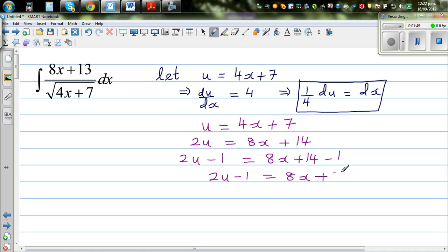So the whole thing has now changed in terms of u. And life would become much easier now. So this becomes integration of 2u minus 1 over square root of u times du by 4.